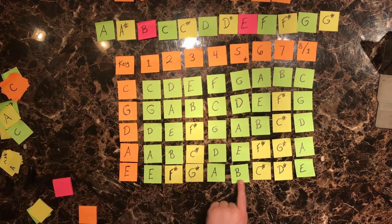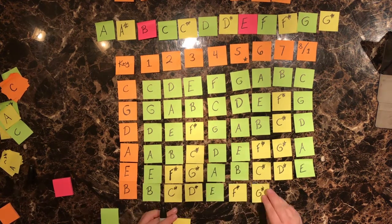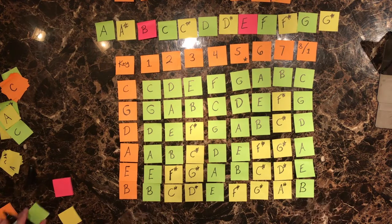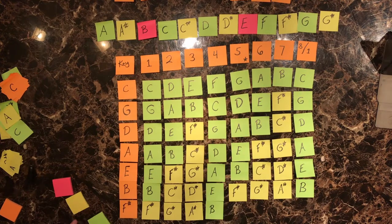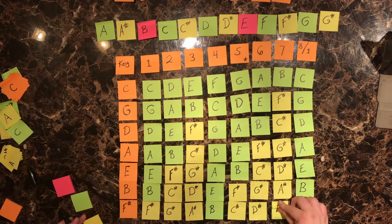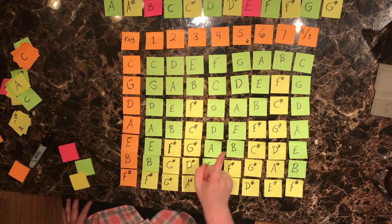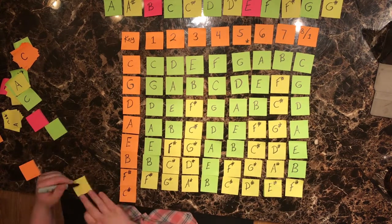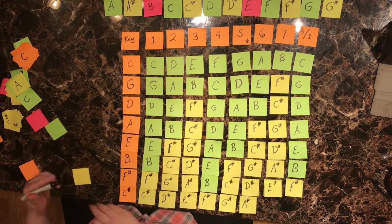E's fifth is B. B, C sharp, D sharp, E, F sharp, G sharp, A sharp, B. B's fifth is F sharp. F sharp, G sharp, A sharp, B, C sharp, D sharp, E sharp, F sharp. F sharp's fifth is C sharp. This one is easy because every single note is sharp. C sharp, D sharp, E sharp, F sharp, G sharp, A sharp, B sharp, C sharp.